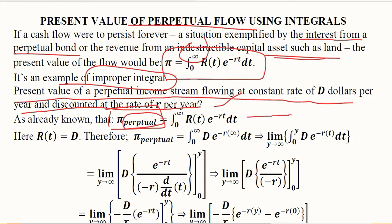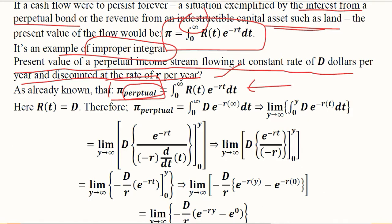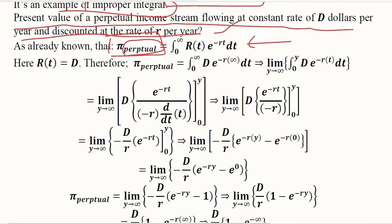So this is the formula and we have to now substitute the values and simplify it. Here instead of R(t) we can write D because this is the annual return, and once we substitute this value we come to the solution.